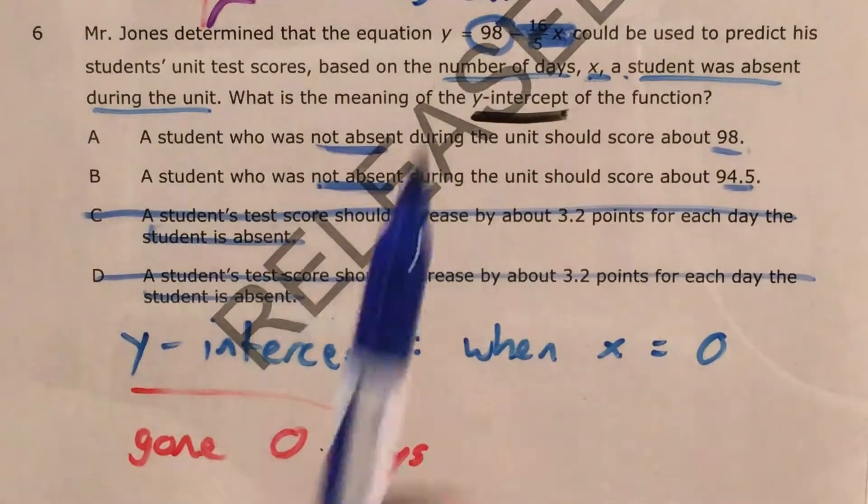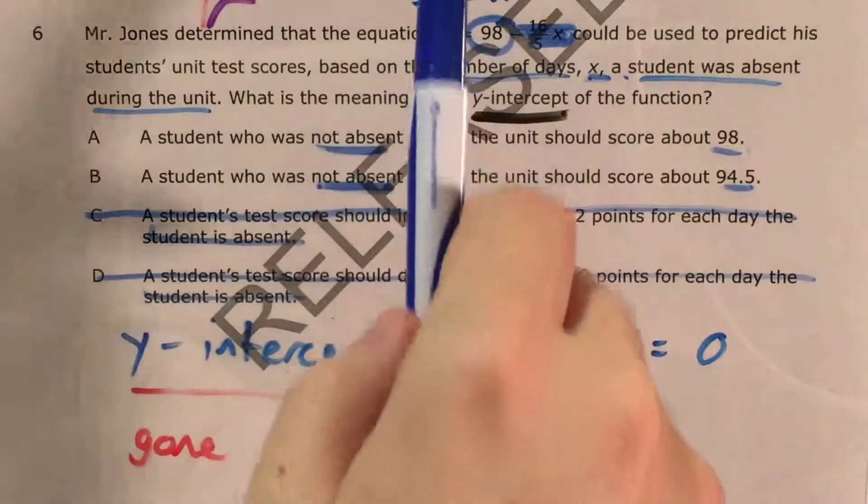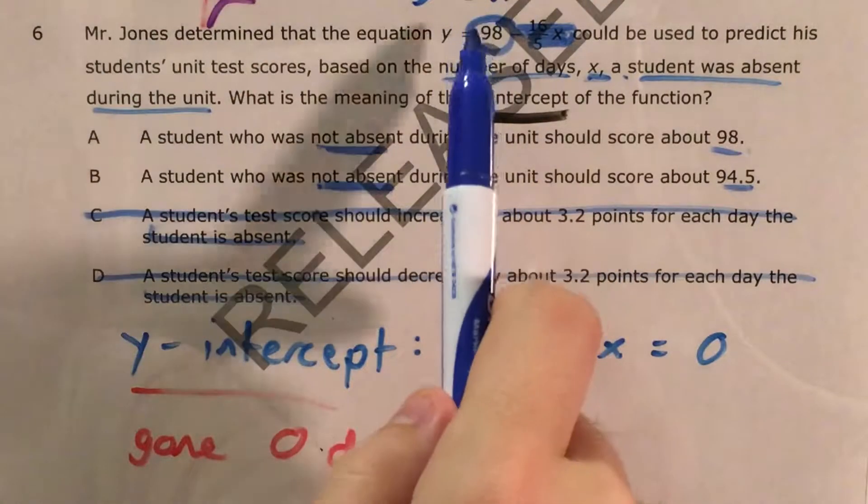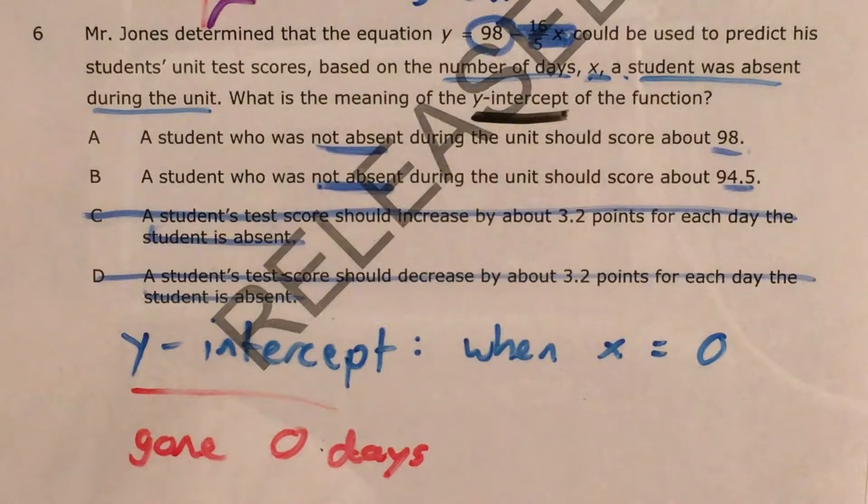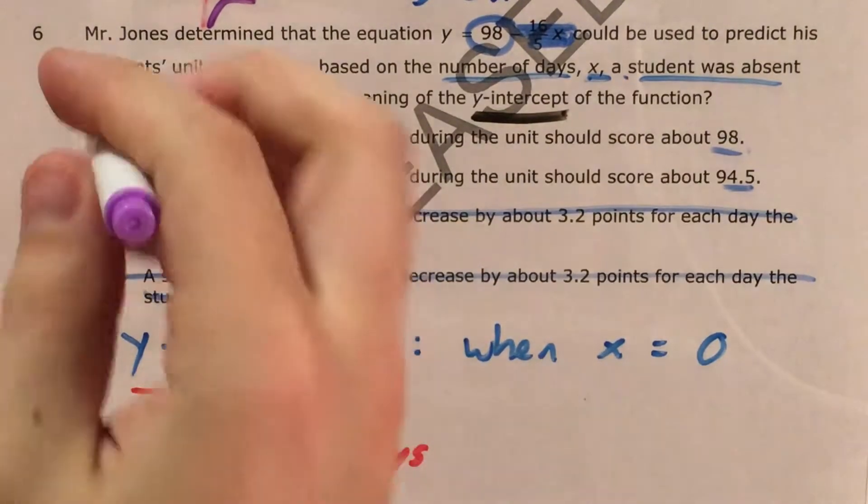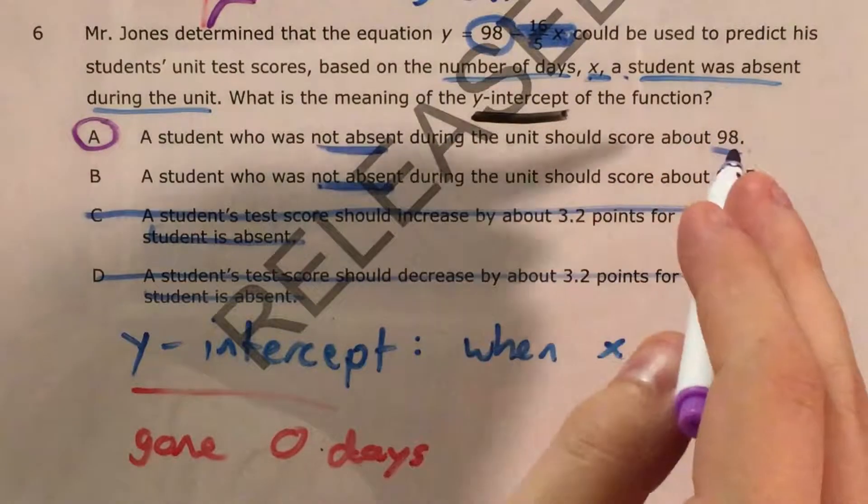So the idea of the y-intercept is that it's what happens when x equals 0, and in the context of the function notation, it's just this number here that hangs out by itself and doesn't have a variable with it. So our answer is going to be choice A. A student who was not absent during the unit should score about 98.